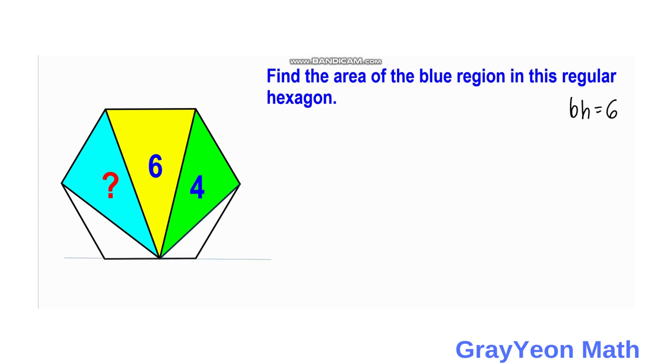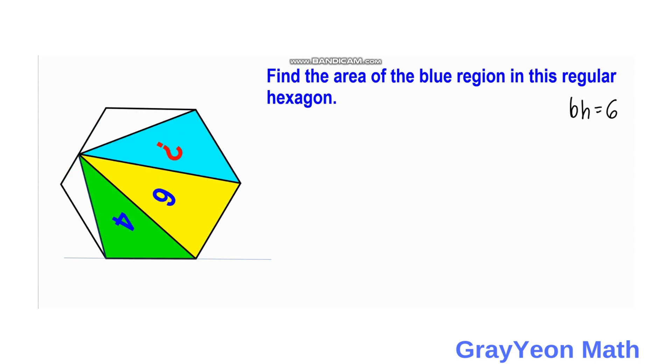Next thing that we have to do is we need to rotate this hexagon clockwise in such a way that this side will be the bottom of this regular hexagon. We are going to label it again as earlier. We have this side as B, the base of this green triangle and we label this again as the height, which is 2H.